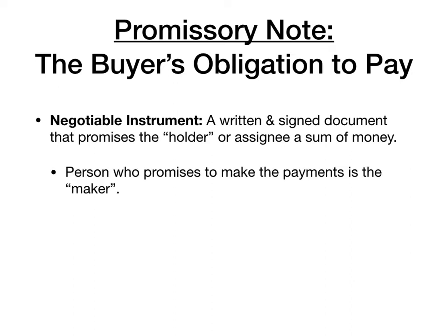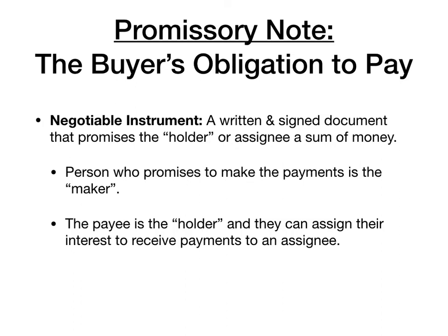The person who signs the note, the one who promises to make payments, is called the maker. They promise to make payments to the holder. The holder can be the initial person who is named on that instrument, or it can be an assignee or somebody that that holder assigns the interest in.